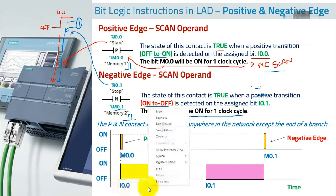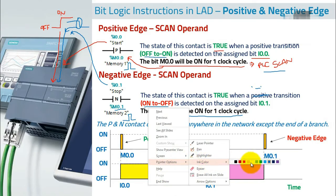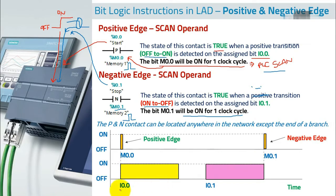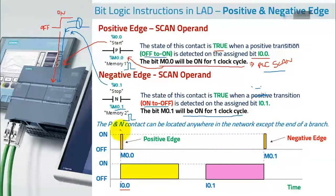Here's an example. For input I0.0, the moment you press the button and it goes on, you get a pulse on M0.0 — this is the positive edge. The duration of this pulse is equal to the scan time.